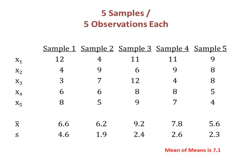However, if I average the means together, I get a mean of 7.1, which is very close to the population mean. In other words, none of my samples individually are close, but collectively my samples are almost spot on.